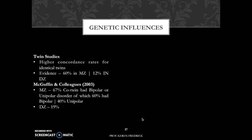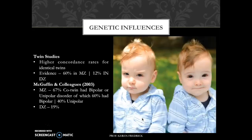The next thing is twin studies. Twin studies demonstrate higher concordance rates between identical twins rather than fraternal twins. Kelso in 1997 demonstrated that 60 percent of monozygotic twins showed a higher concordance rate for bipolar disorder over just 12 percent of dizygotic twins. One key study was done by McGuffin and colleagues in 2003, wherein 67 percent of monozygotic twins with bipolar disorder had a co-twin with bipolar or unipolar disorder, compared to only 19 percent of dizygotic twins.